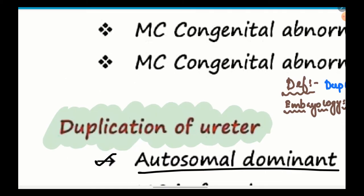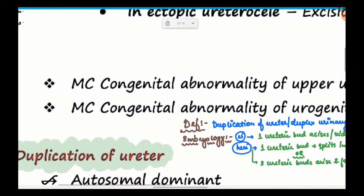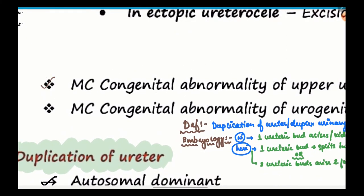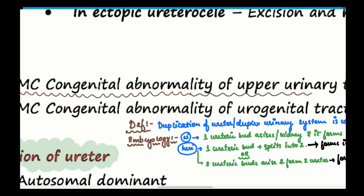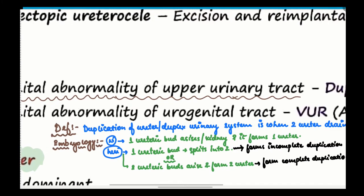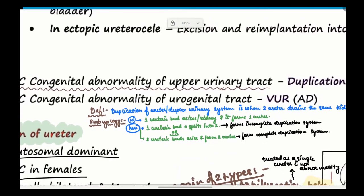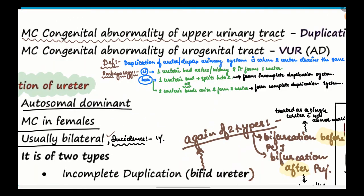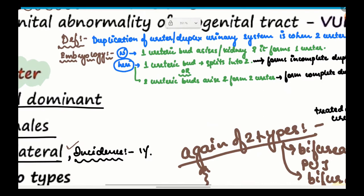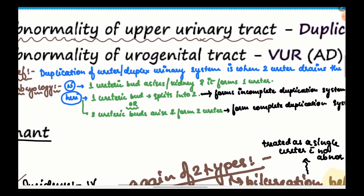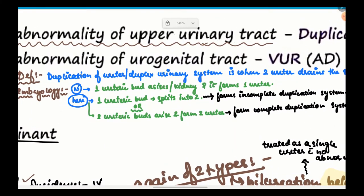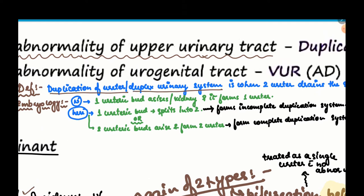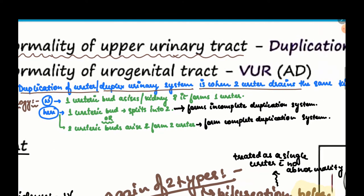Duplication of the ureter — why is it so important? It is the most common congenital anomaly of the upper urinary tract. The incidence is 1%. The definition is: duplication of ureter or duplex urinary system is when 2 ureters drain the same kidney.